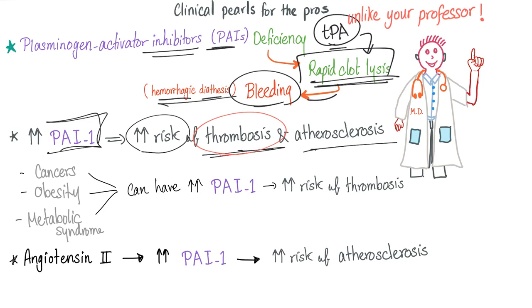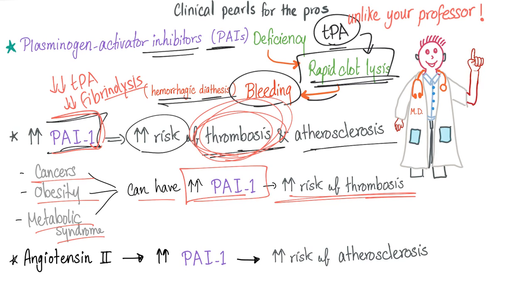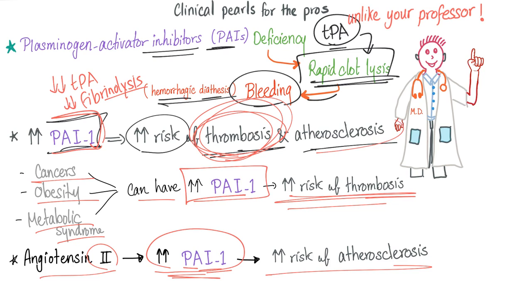Why increased risk of thrombosis? Think about it — if you have an increased inhibitor, you will have decreased TPA and decreased fibrinolysis. You are not going to lyse your clot; the clot will persist, giving you an increased risk of thrombosis, which makes perfect sense. Cancers, obesity, and metabolic syndrome can have increased PAI, and that's why these diseases have increased risk of thrombosis. Resistin also increases PAI1, leading to increased risk of atherosclerosis.